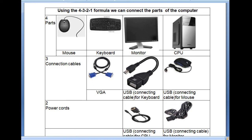In the activity, we identify the parts: the mouse, the keyboard, the monitor, and the CPU. These are different parts of the computer. To connect these parts, we use connection cables. We can use VGA — Video Graphics Array — and USB.